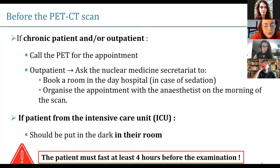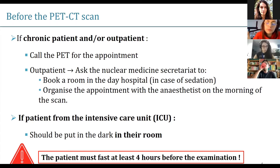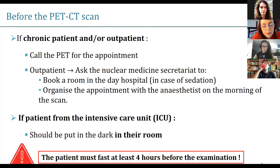If the patient is from the intensive care unit — mainly acute patients — it's a bit different. For chronic patients, we bring the patient to the nuclear medicine service to do the dark session and the FDG injection. But for acute patients, as they are really fragile, it's better to do everything in their room and then just bring them to the PET just for the acquisition. So you should put them in the dark and do the injection in their room at the intensive care unit. As we will look at glucose metabolism, it's really important that the patient should fast at least four hours before the examination. You can give them water, but no food.